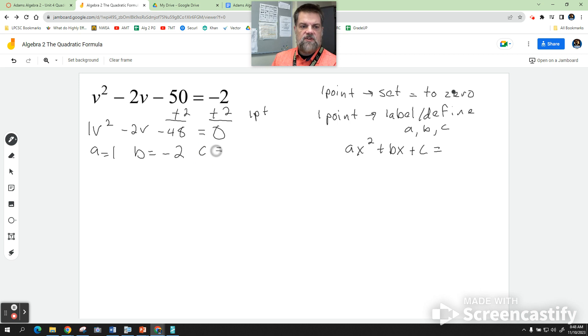And then c is equal to negative 48. So that's one point. And I do want you to write this down every time. It'll be so easy: write quadratic formula.